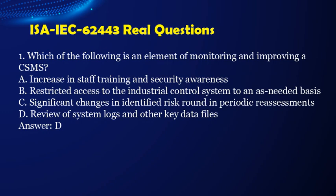Question 1. Which of the following is an element of monitoring and improving a CSMS? a. Increase in staff training and security awareness. b. Restricted access to the industrial control system to an as-needed basis. c. Significant changes in identified risk found in periodic reassessments. d. Review of system logs and other key data files. Answer: d.